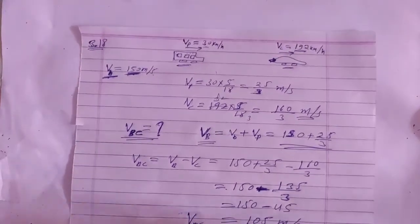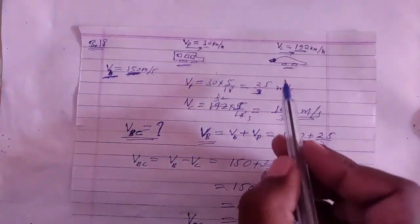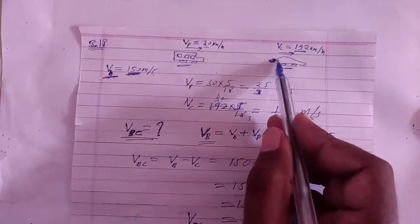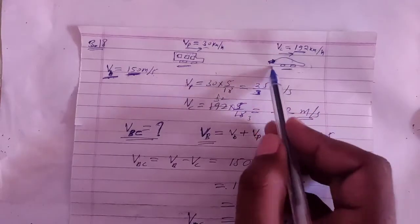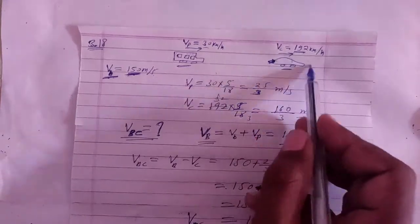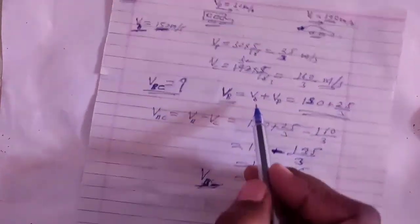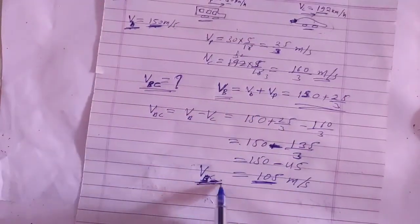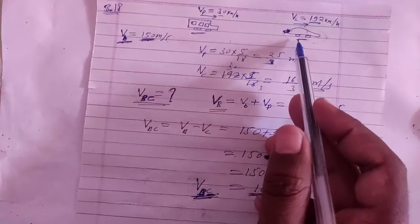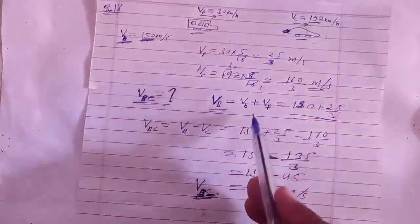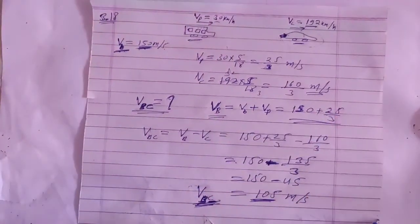So the speed at which the bullet hits the thief's car is 105 meter per second. The answer is correct.